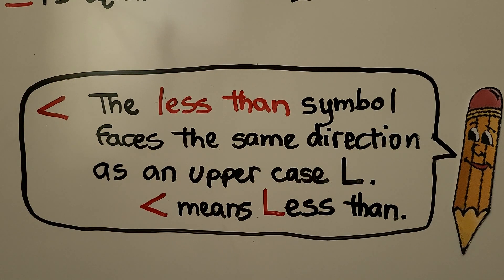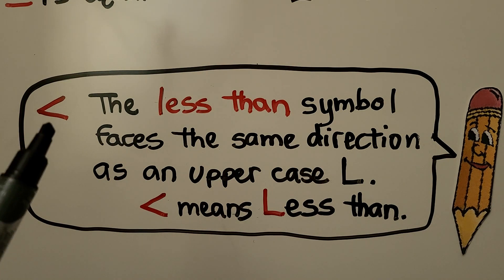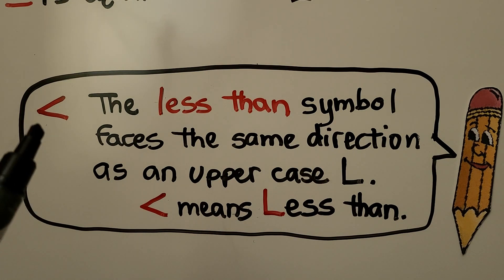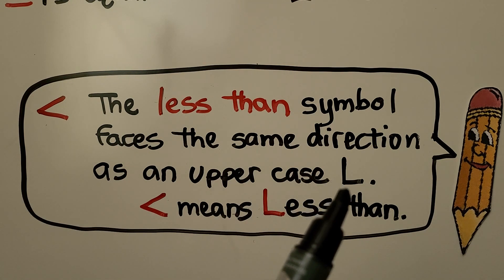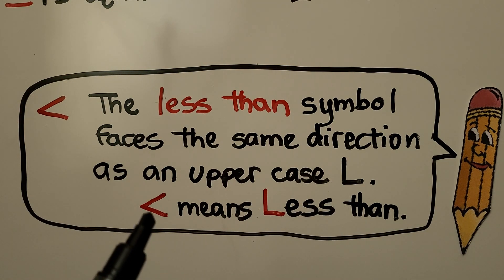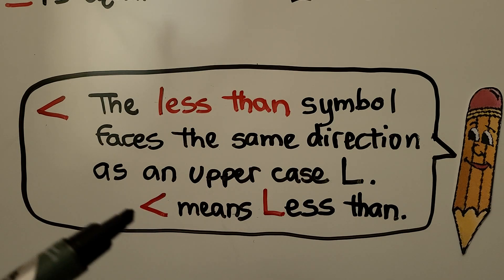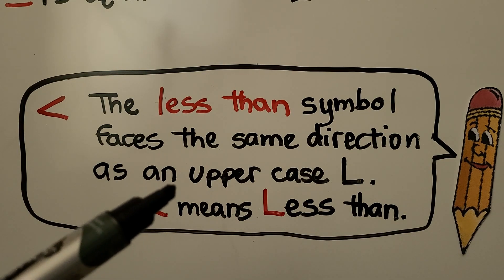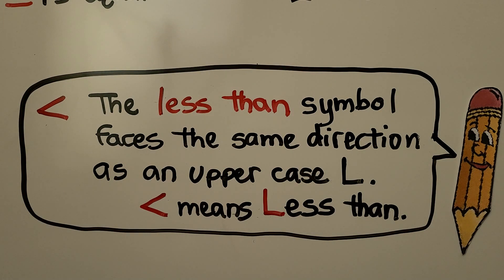Some students have trouble remembering which sign is less than and which is greater than. One way to remember: the less than symbol faces the same direction as an uppercase L. This symbol means less than, and it kind of looks like a sideways L, like an L that's been on a slant. So that's less than.